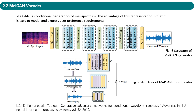Moreover, MIR-GAN combines the powerful generation ability of GAN. Figure 6 shows the structure of the MIR-GAN generator. The generator is a Convolutional Feed-Forward Network. Figure 7 shows the structure of the MIR-GAN discriminator. The discriminator is based on a multi-scale architecture that encompasses three discriminators.